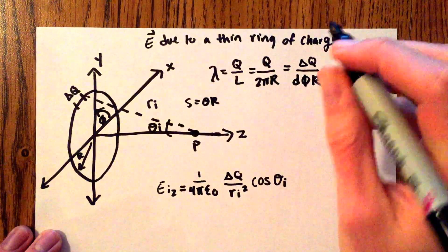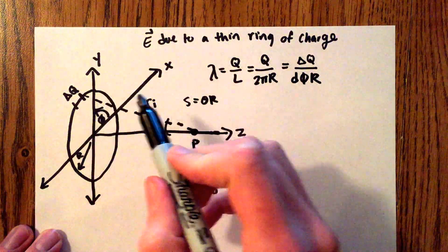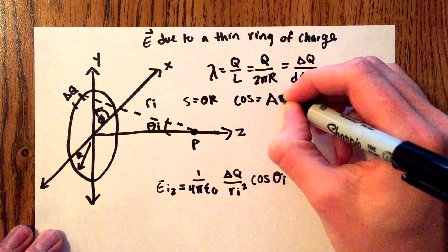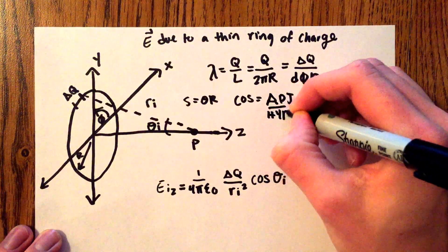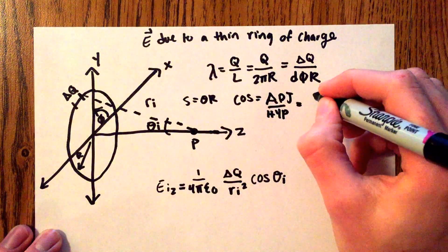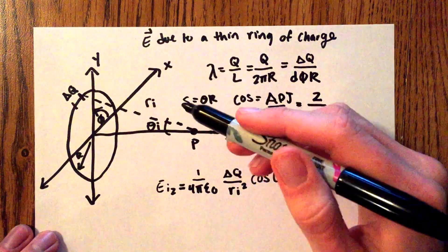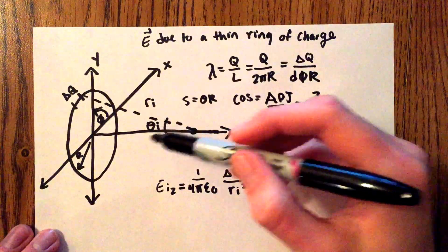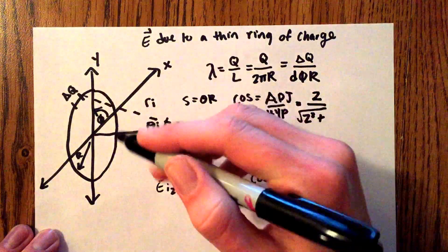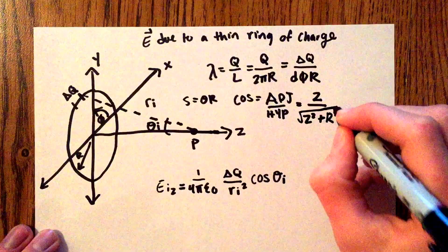For cosine of theta, we can also make some substitutions. We see that this makes a right triangle, so cosine equals adjacent over hypotenuse. The adjacent here is the distance z, so it'll be z over the hypotenuse, which equals the square root of z squared plus r squared.